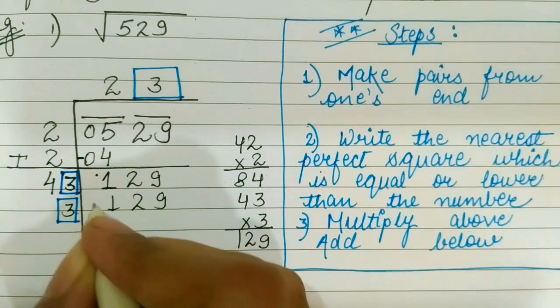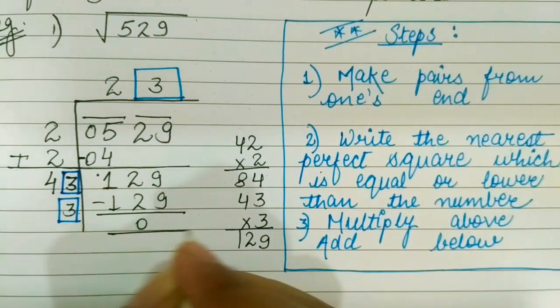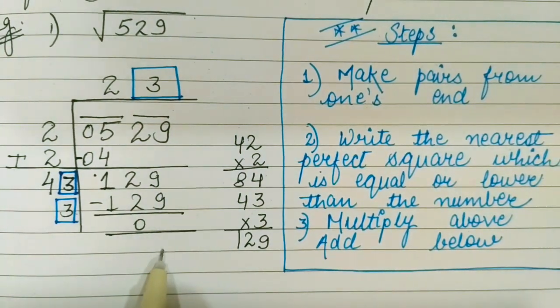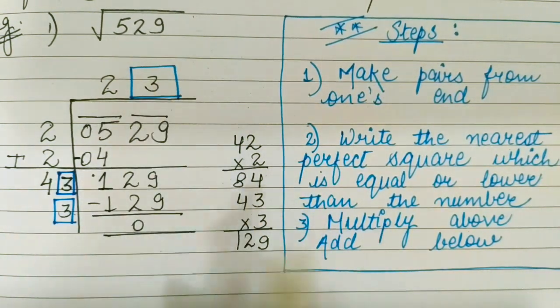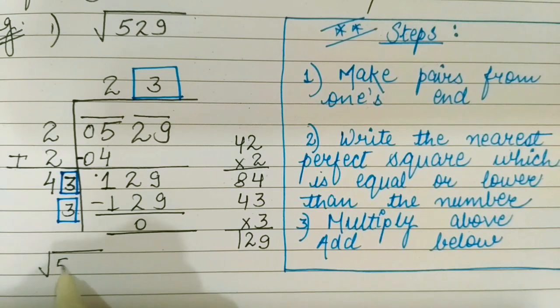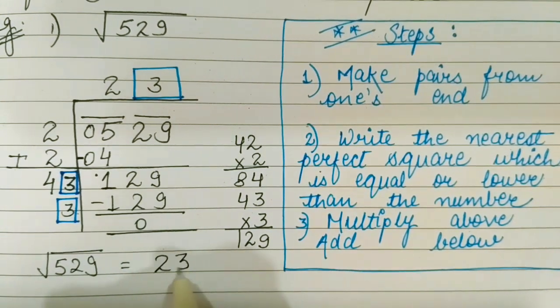129. We have to continue until we get a 0 here. So our under root is 23. Under root of 529 is equal to 23.